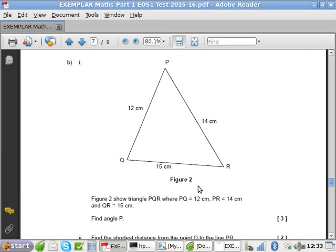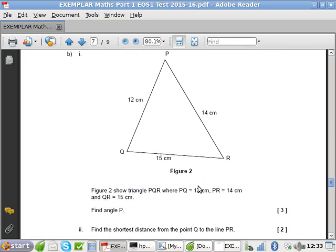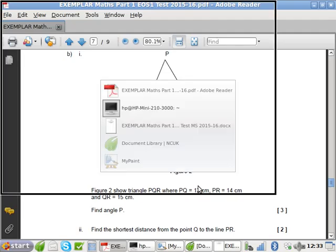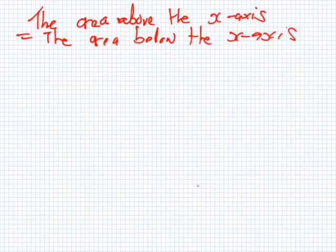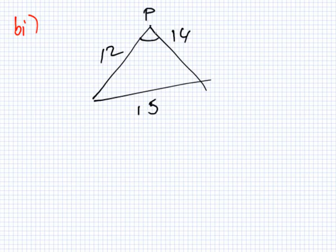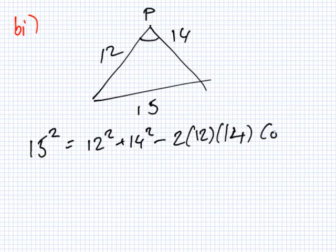Now, the triangle. What are we asked for first? Find the angle P. So it's 12, 14, 15. And they want the angle here at P. What rule could I use to get that angle? It has to be cosine rule. So you'd say 15 squared equals 12 squared plus 14 squared minus twice 12, 14, cos P.